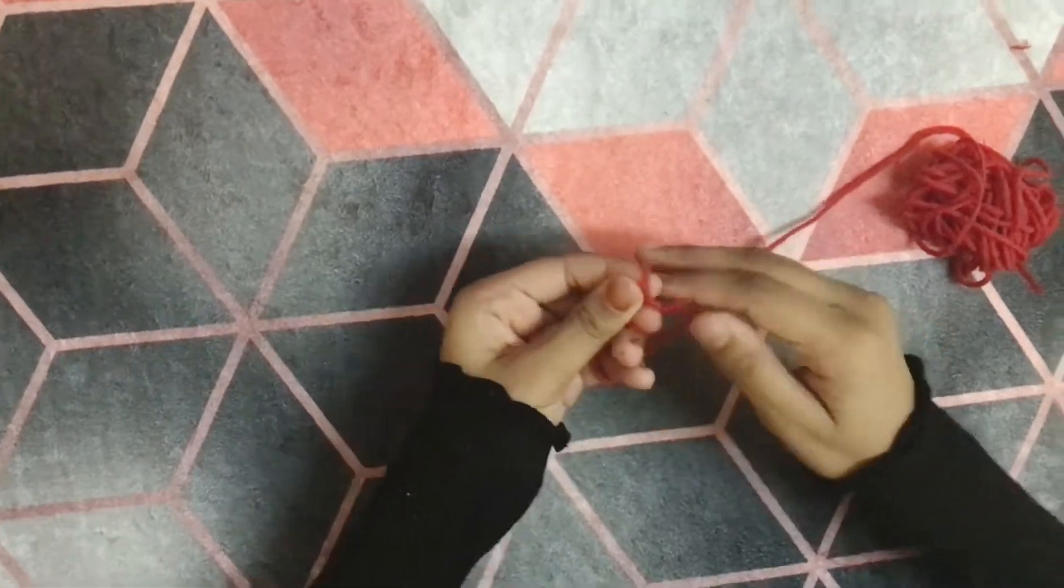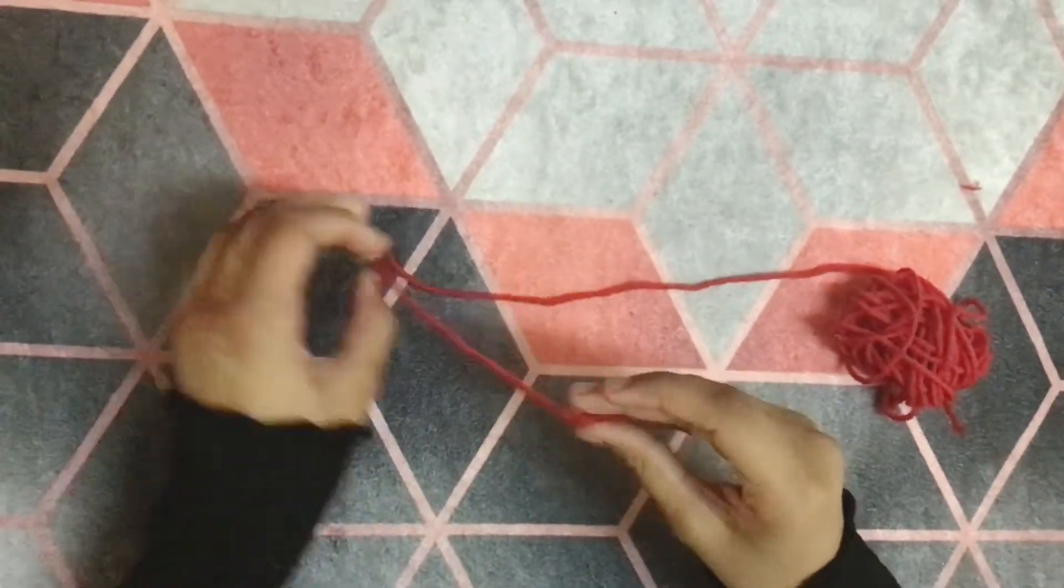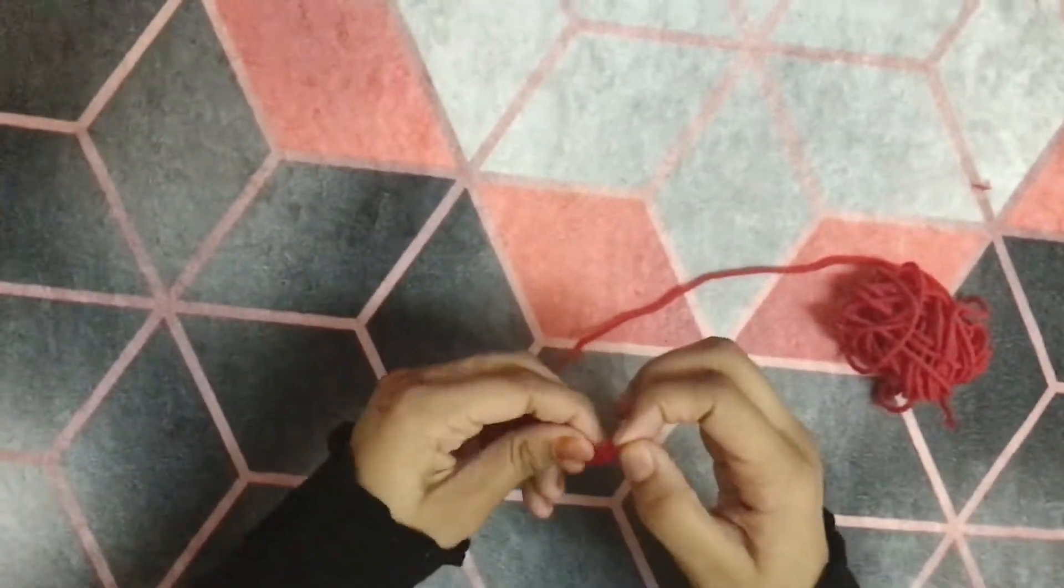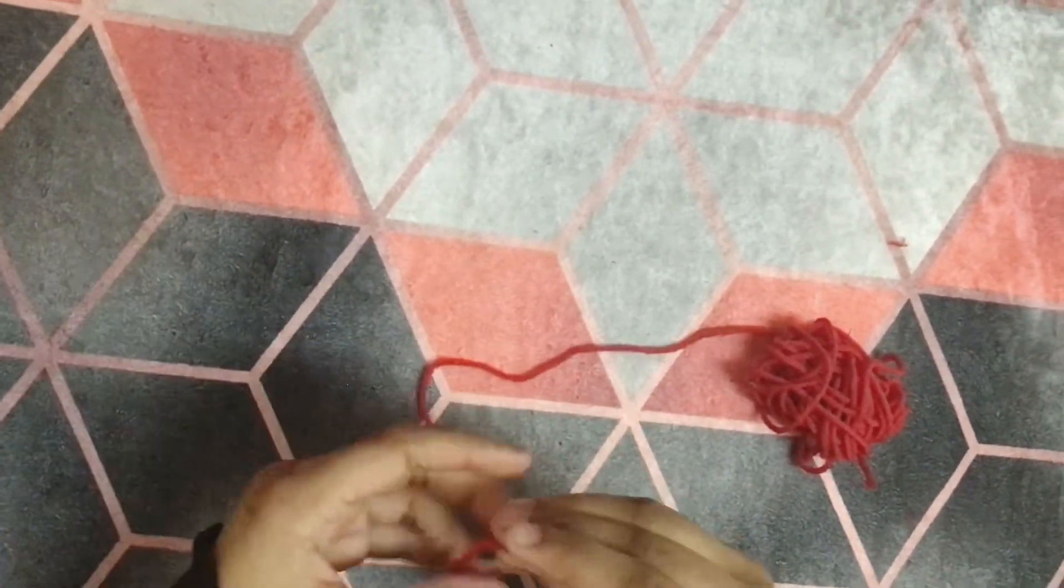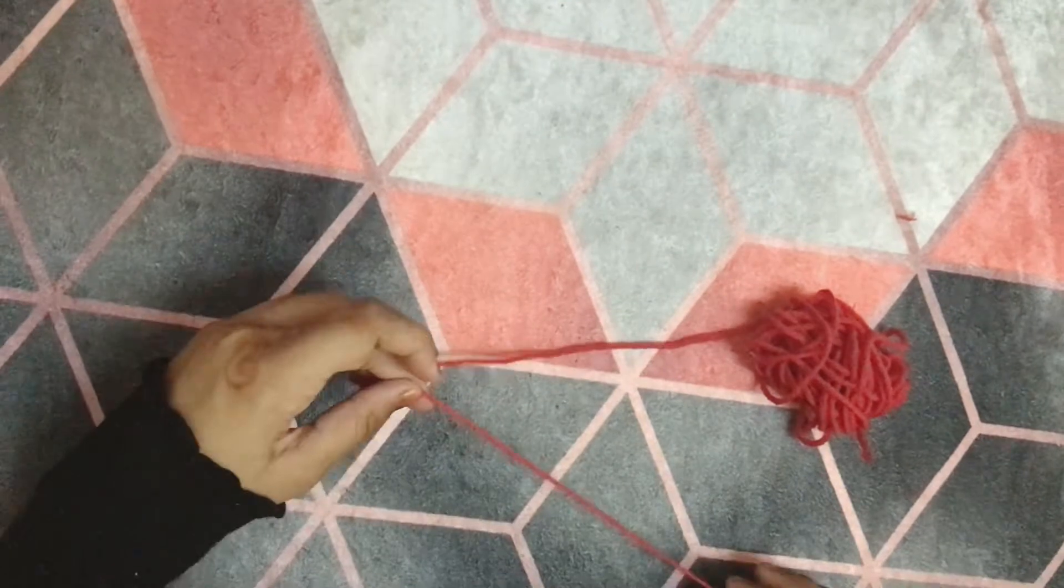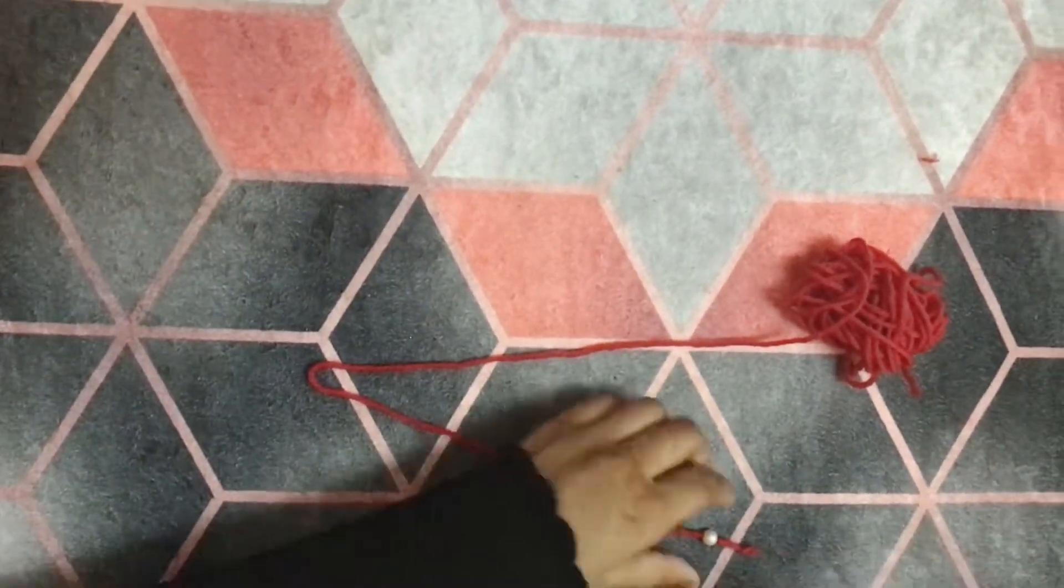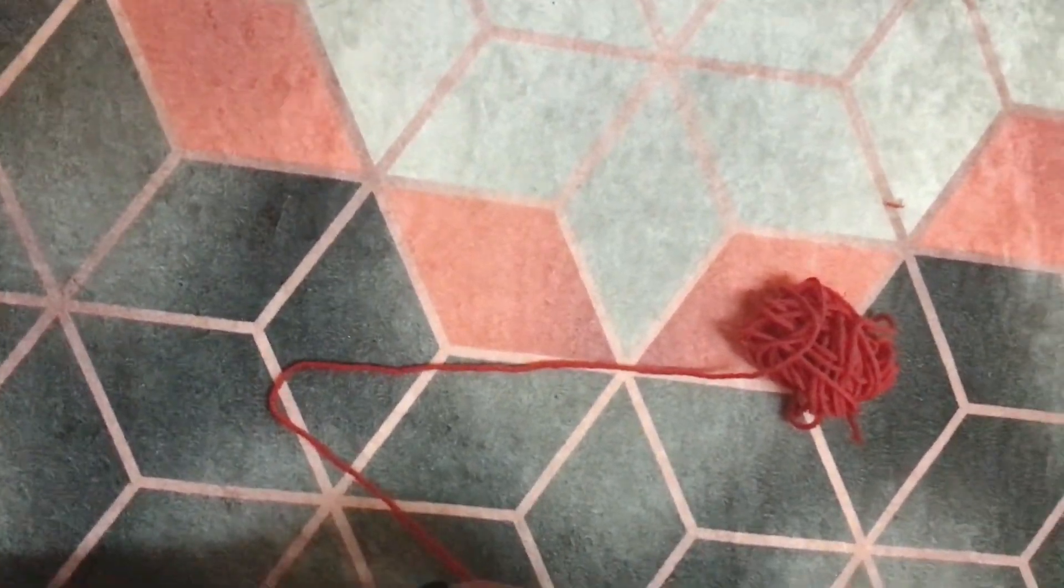And then I am going to tie the woolen thread so that the bead doesn't fall out. I am tying it two times. Then I am going to cut the excess part.